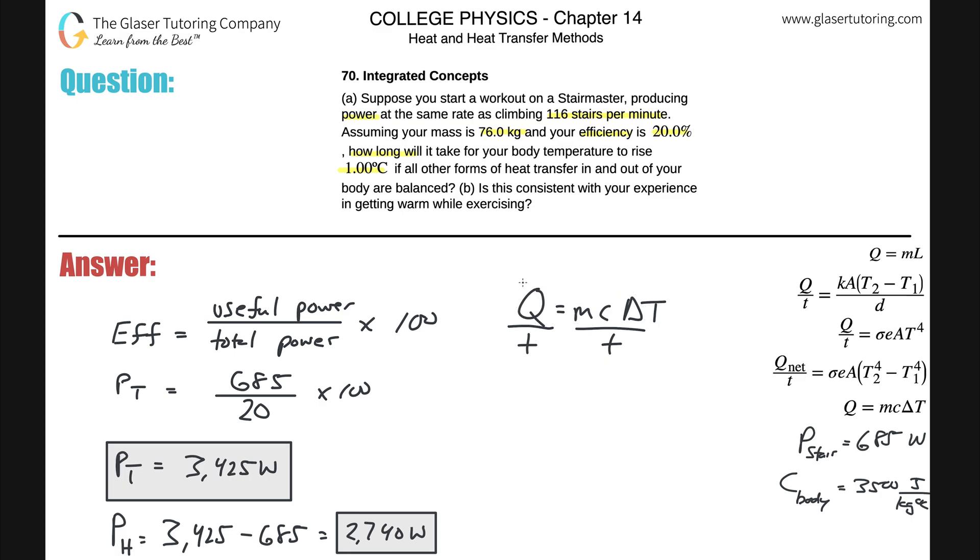Whatever I do to the left-hand side, I can do to the right-hand side. So this is still going to be a true equation. But what we realize now is that this Q over T is power. And since we're talking about raising the temperature of an object, this is known as the power that's required to raise the temperature, or the power dedicated to heat. So this is going to be the mass of the body multiplied by specific heat of the body multiplied by the change in temperature of the body, all divided by time.